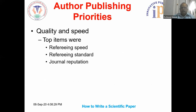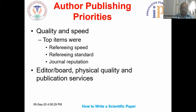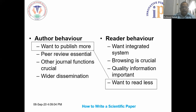The priorities of the author include quality, speed of publication, referring speed, referring standards, and the reputation of the journal. The author also considers the editorial board of the publisher and the physical quality of the journal. In terms of author behavior, the author wants to publish more in peer-reviewed journals, and the publications should be widely disseminated. For the author, an integrated system with browsing capability and quality information is important.